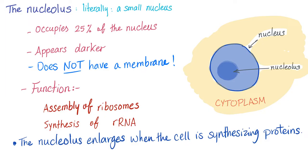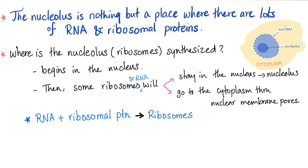The nucleolus enlarges when the cell is synthesizing proteins because it's more active then. It's like when you're shy, you blush. You're more active, you appear darker. Let's have some Medicosis words of wisdom here.